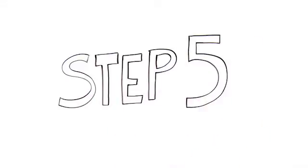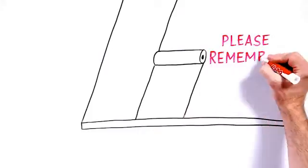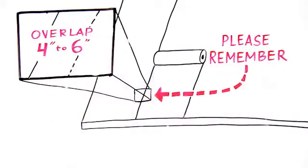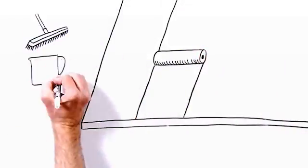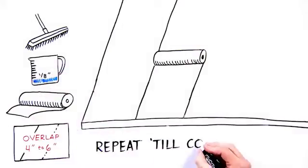Step 5. Unroll the next layer of UltraCure in a straight line. Please remember to overlap the previous roll of UltraCure by at least 4 to 6 inches. At this point, you will continue to repeat steps 3 through 5 until your entire surface area is blanketed.